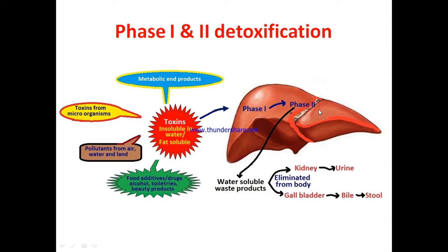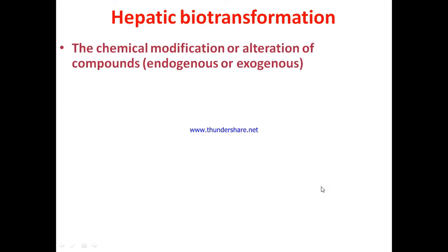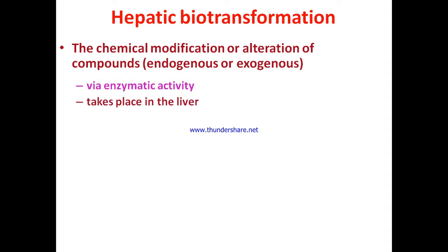These toxins undergo phase one and phase two biotransformation, mostly in the liver with the help of different enzymes. As a result, they are converted into water-soluble waste products that are non-toxic or less toxic, and they get excreted mainly through the kidneys as urine, or through the gallbladder and bile via stool. Hepatic transformation — the chemical modification of endogenous or exogenous compounds — happens in the liver via enzymatic activity.